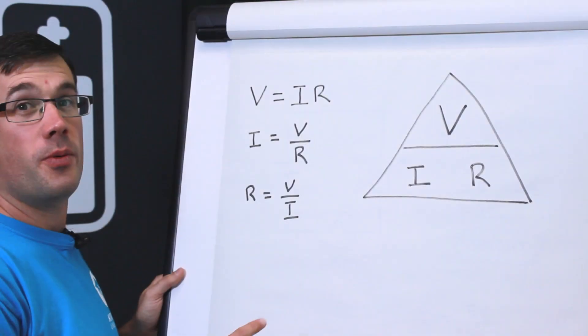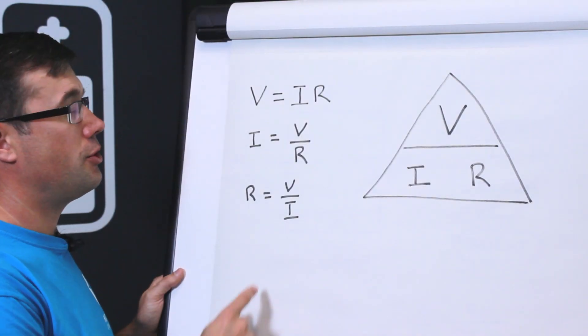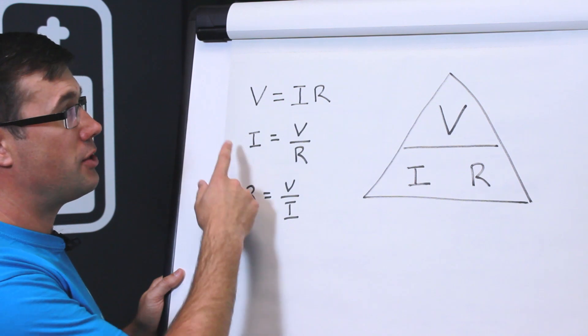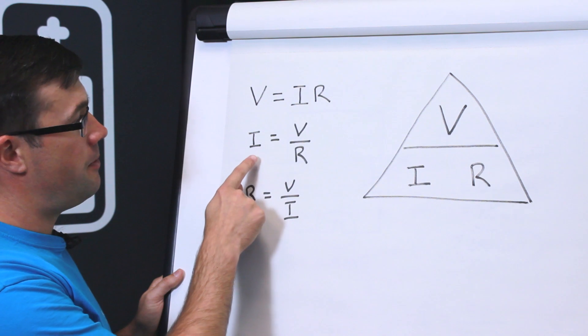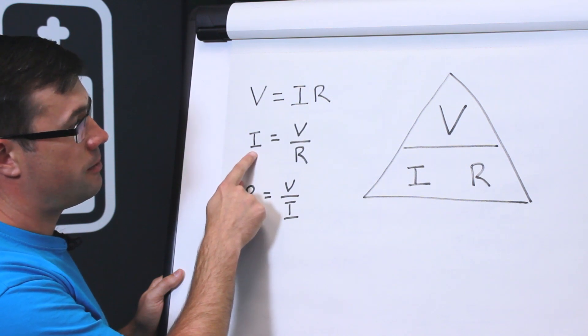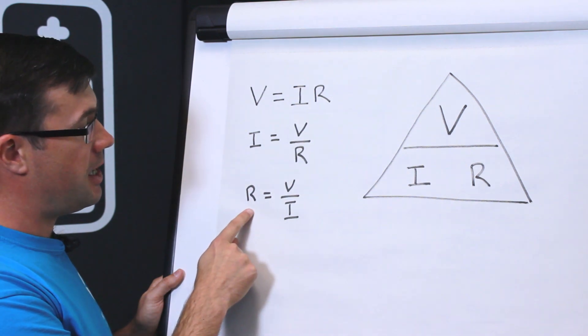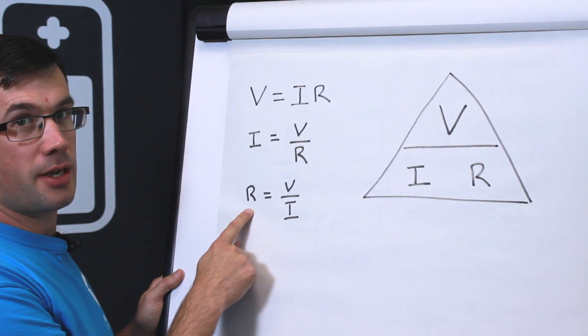So if we know any two of the three we can use some simple algebra to rearrange the formula to make the third item the subject. So I've done that here where I've made the current the subject and I've rearranged it again here to make the resistance the subject.